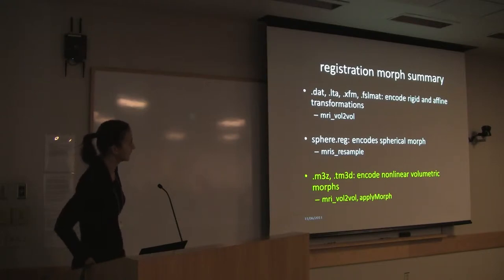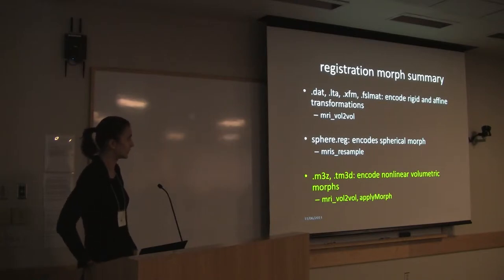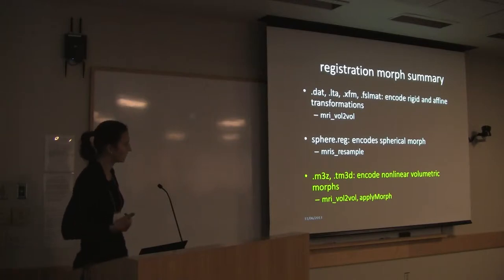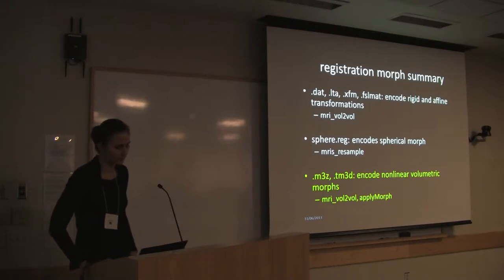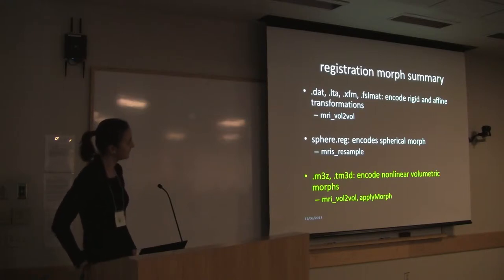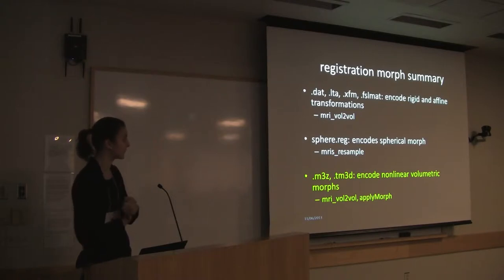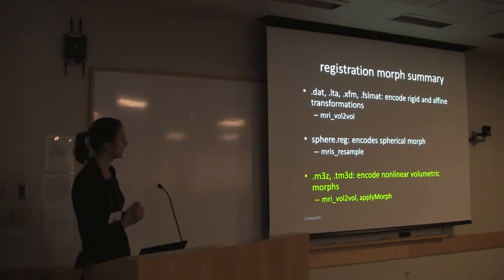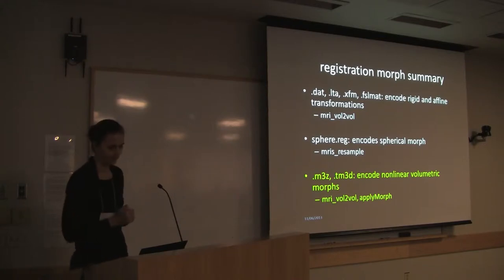Here I'm giving you a quick summary of all the different morphs that you might have encountered during these tutorials. We have transformation files that include rigid and affine transformations. The extensions for those are DAT, LTE, SFM, and FSLmat. In the future we are trying to converge towards using just one of them — for historical reasons we are currently supporting all of these, but we are trying to converge to just using the .LTE format in the future.